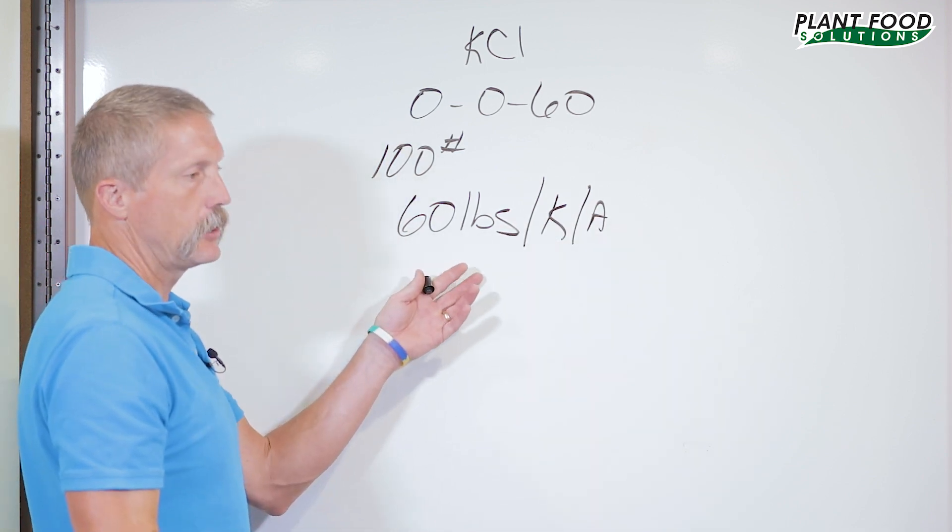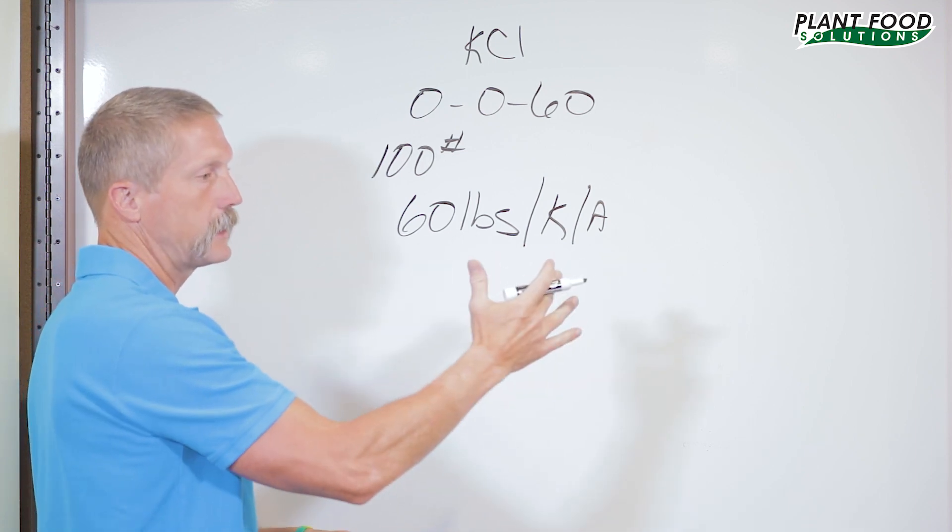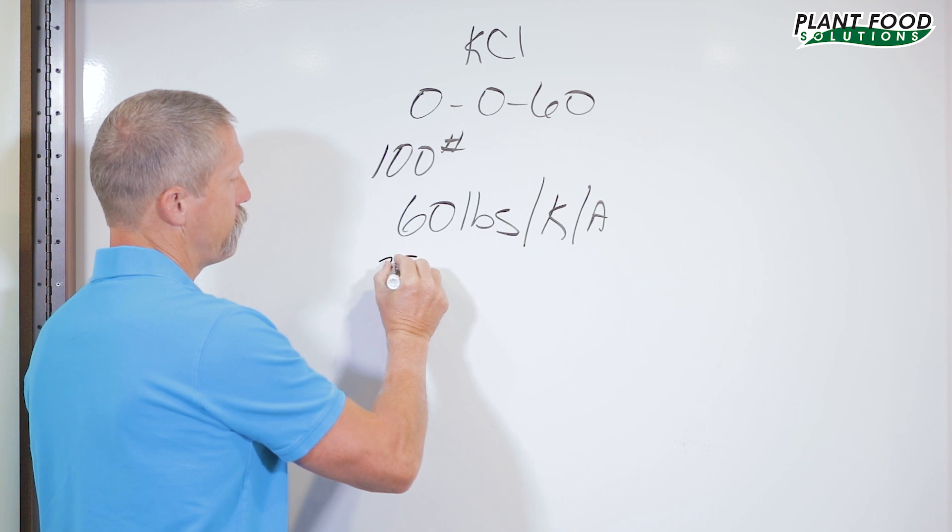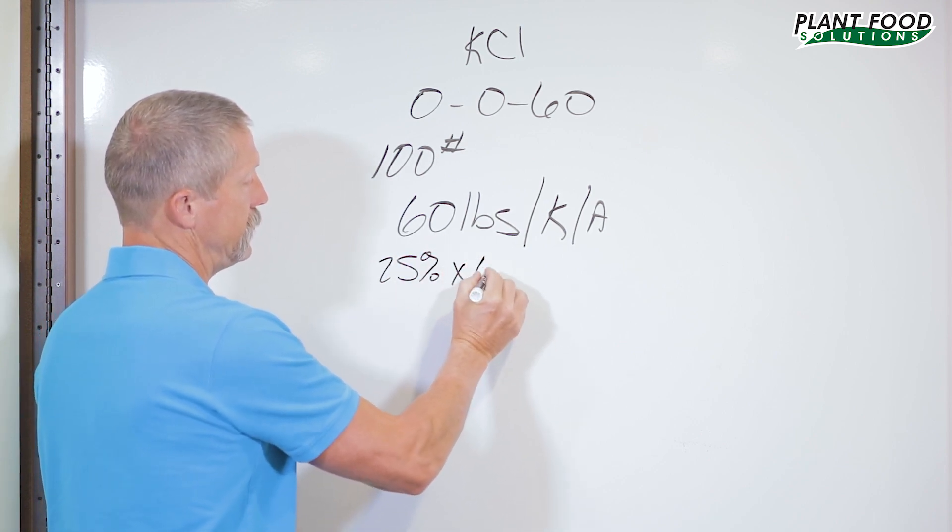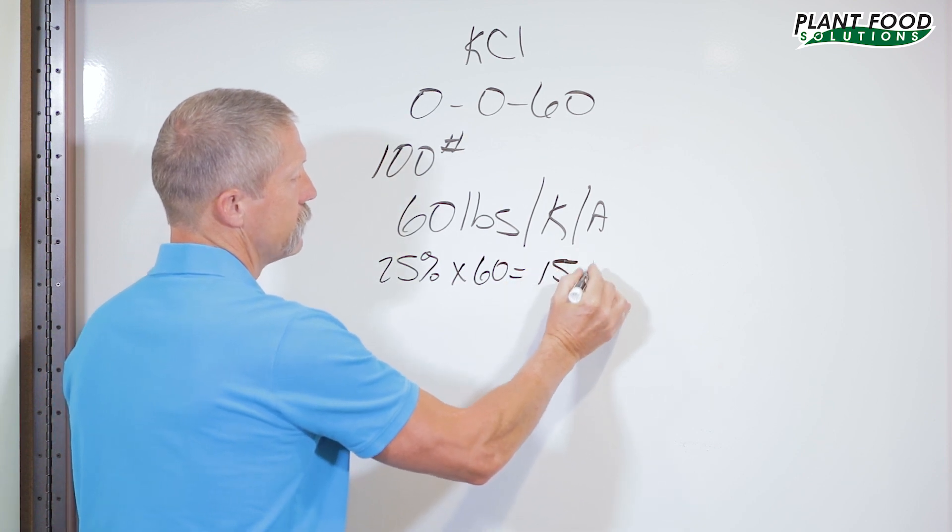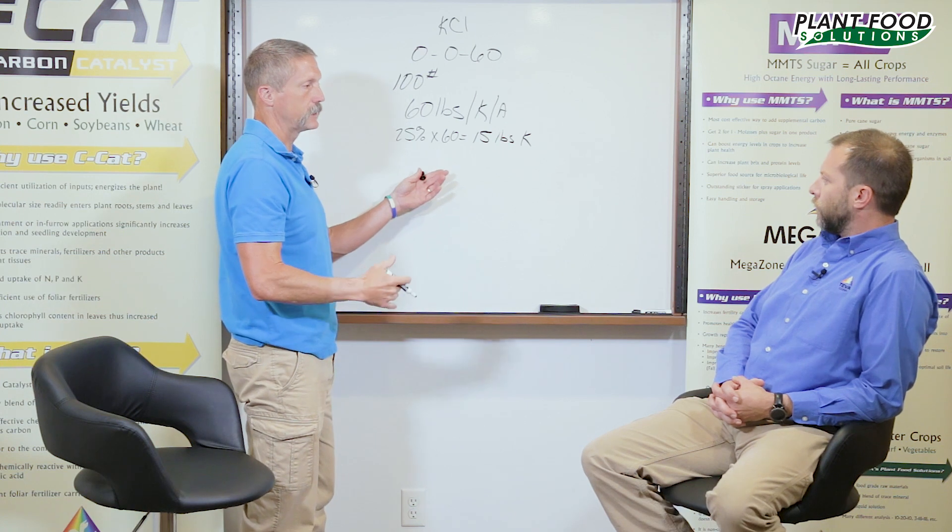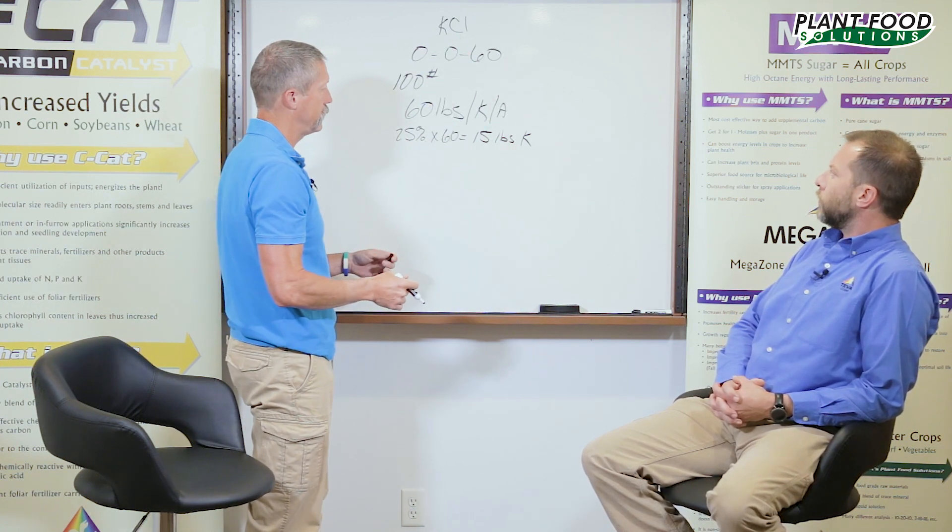If he puts that hundred pounds on, most universities will tell you since this is broadcast spread that only about 20 to 25% is available. So 25% times 60 gives you 15 pounds of K that that plant is going to use in that growing season.